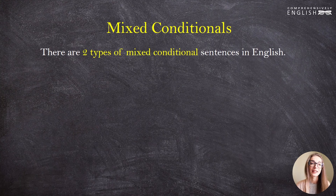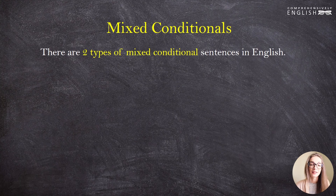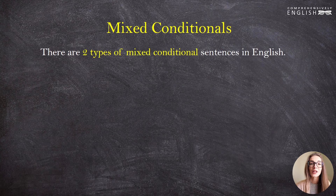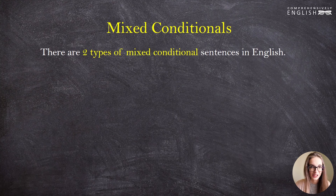Before we begin, I want to stress that these names exist only in grammar books. In reality, there are two things you must remember: how to form the first conditional, and that when we speak about hypothetical things — things contrary to fact — we need to go one tense back. This is how we form the second and third conditionals. Now let's take a closer look at what we call mixed conditionals.